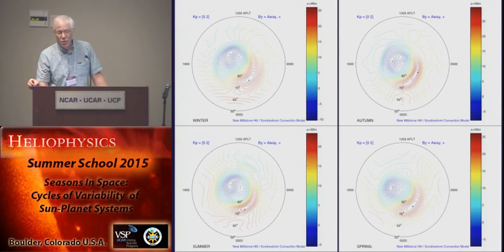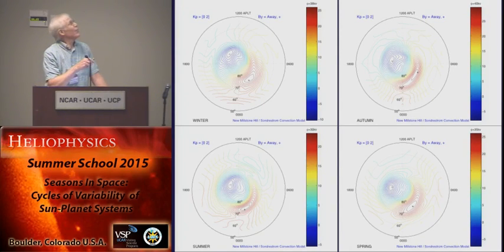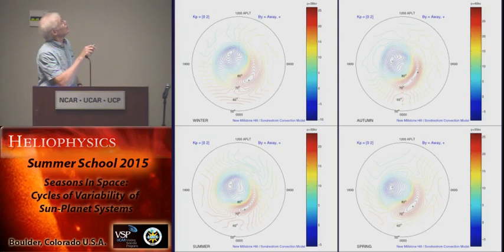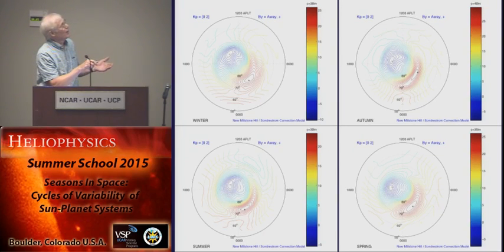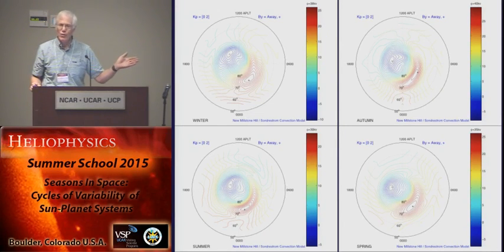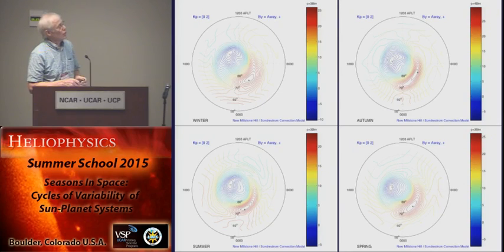Shangrong Zhang took our 50 years of observations of plasma drift measurements from Millstone Hill and made a series of models. This is winter, autumn, summer, and spring — for low KP, meaning low geomagnetic activity. The Y component of the interplanetary field is in the away sector or positive sector. There is a seasonal variation parametrized by KP.